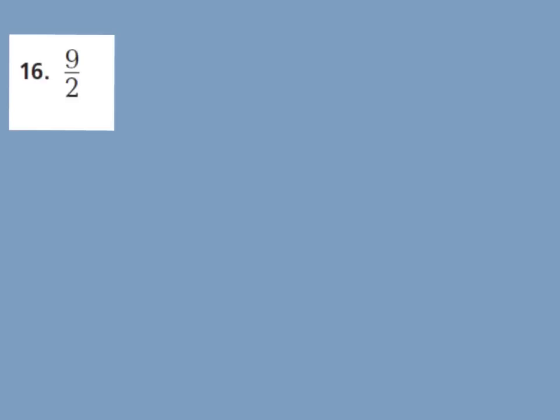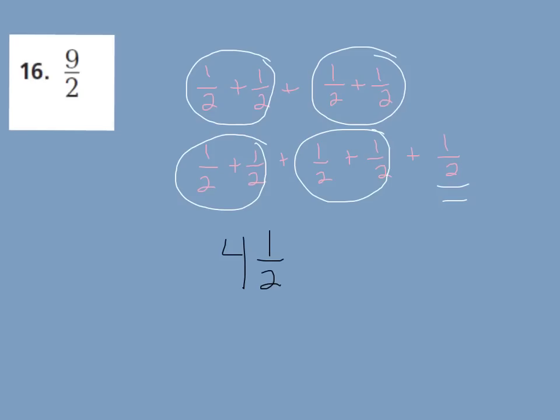Number 16: 9 halves — we need to change that to a mixed number. Try this one by yourself in your GoMath book. After working it out: I broke 9 halves into 1 halves nine times. Two 1 halves equal a whole. I have 4 wholes and 1 half left over. You can check: 4 times 2 is 8, and 8 plus 1 is 9 halves. Also, 9 divided by 2 is 4 with 1 left over, keeping the denominator the same.